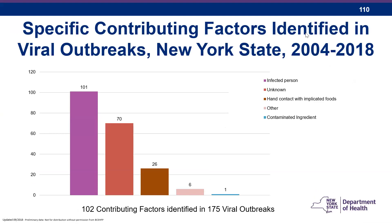For viral outbreaks, there are fewer categories of contributing factors. The majority are associated with the infected person, followed by hand contact with the implicated food, and sometimes contaminated ingredients. This helps train investigators: if you know you're dealing with a viral outbreak, look for an affected food handler, an ill food handler policy, and whether bare hands or gloves were used. Some viral outbreaks involve contaminated incoming products — such as shellfish or frozen berries contaminated with hepatitis.